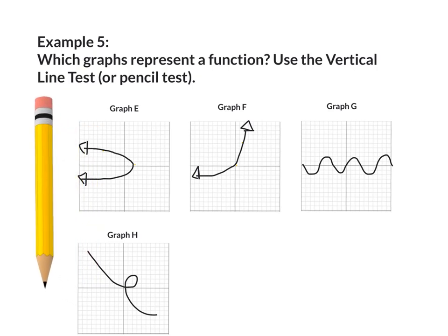I'm going to draw a line to represent my pencil for graph E. My coordinates would be negative 5, 3 and negative 5, negative 3. The inputs are both negative 5. Do they have the same output? No. One is at negative 5, 3 and the other is at negative 5, negative 3. This makes graph E not a function.